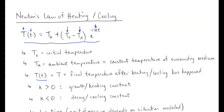We now know what everything means. We start with some ambient temperature; this is the difference between the actual temperature of the object and the ambient temperature. That difference will either increase or decrease exponentially, depending upon whether we're heating or cooling.